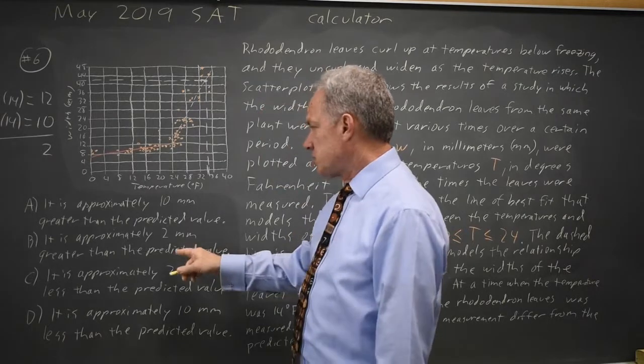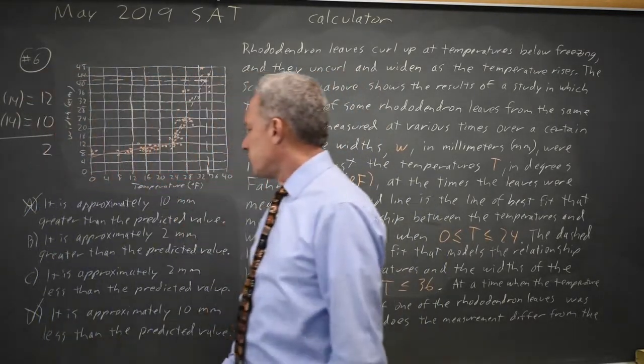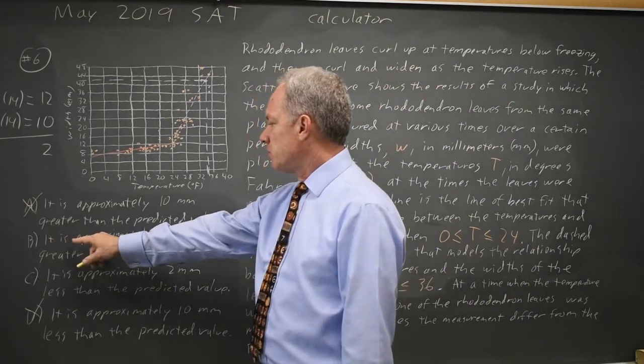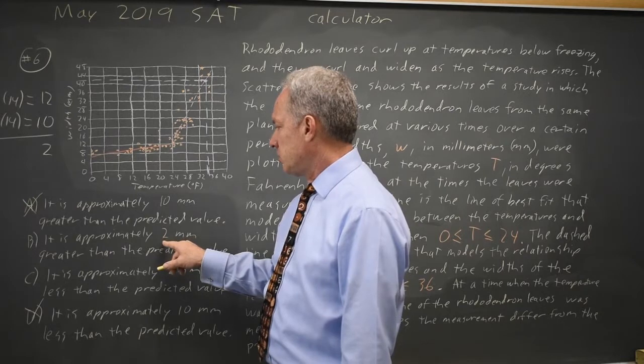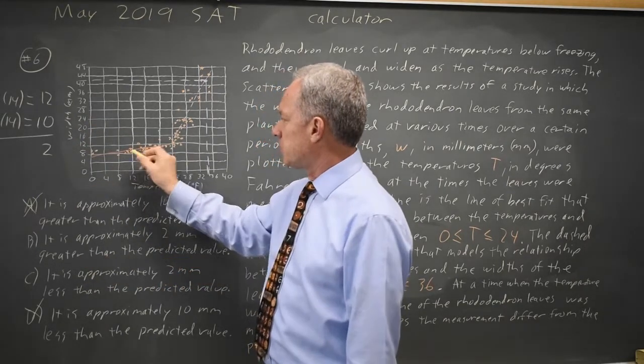So the difference is 2, not 10, so A and D are wrong, and they're asking about the measurement. The measurement is approximately 2 millimeters of width greater than the predicted value for the line of best fit.